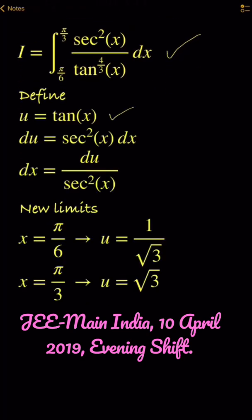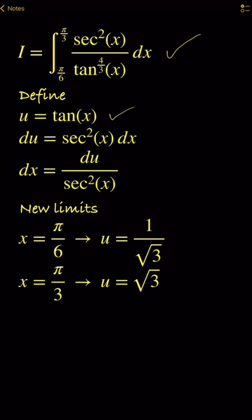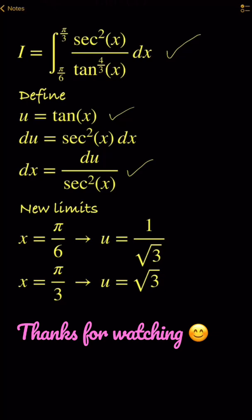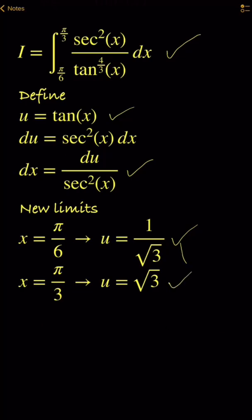Define u equals to tangent x. From there we get dx equals to du divided by secant square x, and then we get the new limits in u as well, which is 1 over square root of 3 and square root of 3. Replace everything into I.